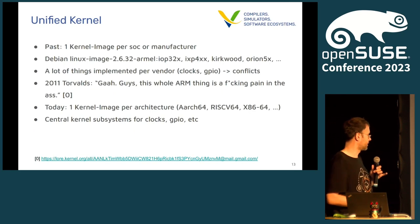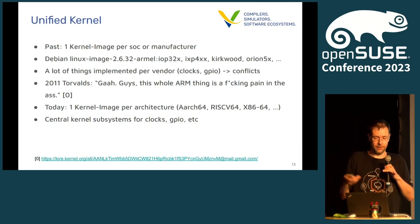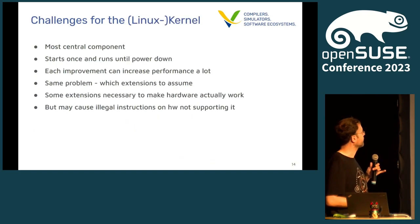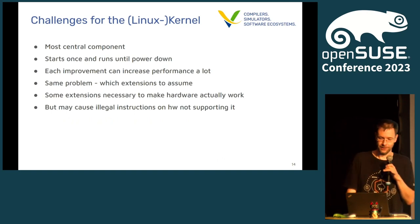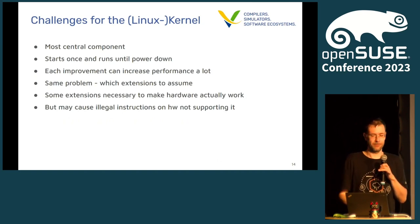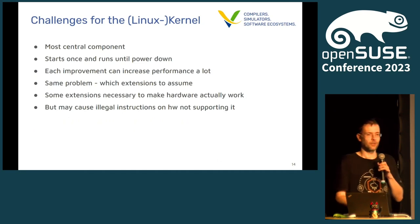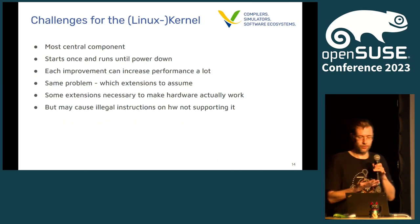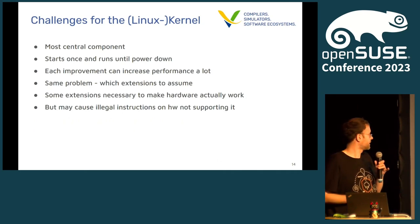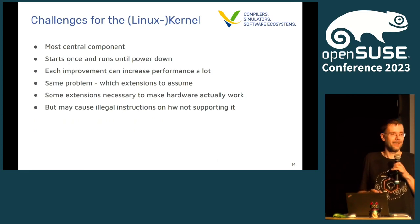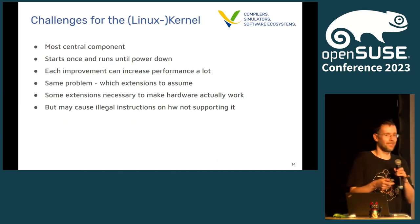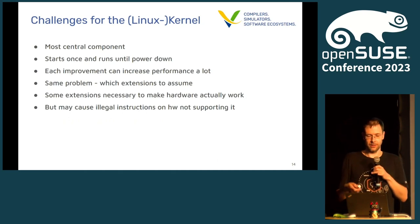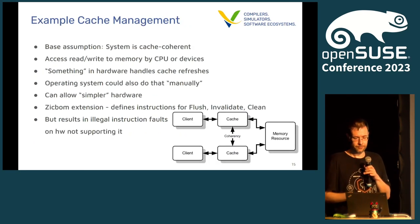But how can the kernel adapt itself to RISC-V specialties? It's the most central component — it starts once and runs until the system is powered down or restarted. Every improvement you can use can improve performance a lot. We always have the same problem: which extensions can we assume are there? In the kernel itself, some extensions are actually needed to make a system work. On other systems, enabling an extension will cause illegal instructions and hang.